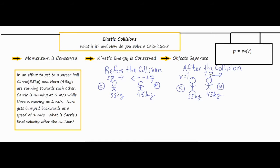Now I've completed the most important part of the problem, which is analyzing the situation, drawing my before and after pictures, placing values and negatives. Your first step is to make sure you label a section for before the collision and after the collision. I would lay it out exactly as you see it on the screen — before the collision on the left, and after the collision directly to the right of it. Then just draw some quick sketches.